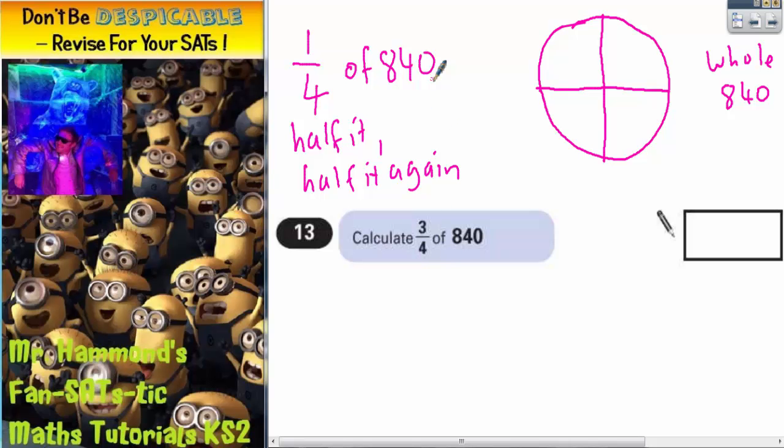So, half of 840 is 420. And half it again, well, half of 400 is 200 and half of 20 is 10. So half it is 420. Half it again is 210.